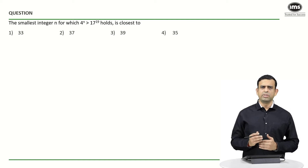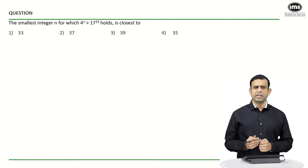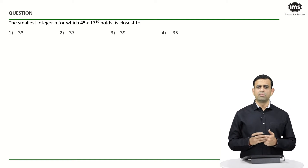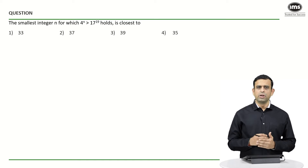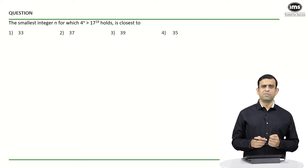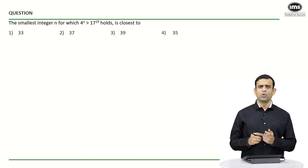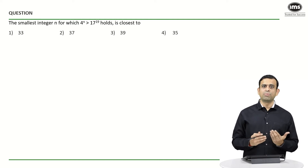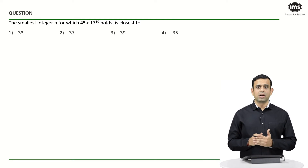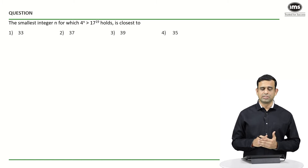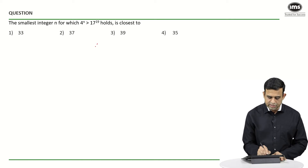Do you think the number 17 is connected to the number 4 in any way? The answer seems to be no. But if you ask yourself a simple question — what is the closest number to 17 which happens to be a power of 4 — that number turns out to be nothing but 16.